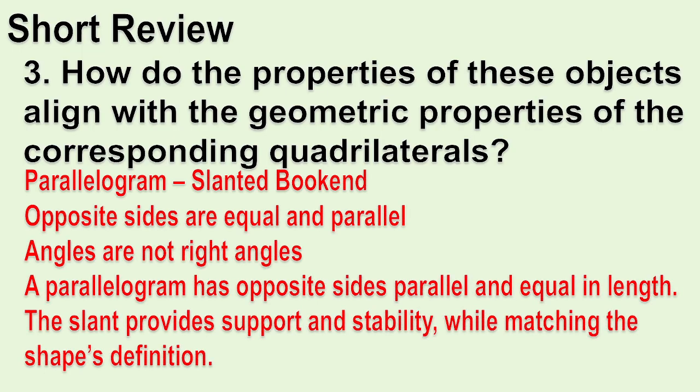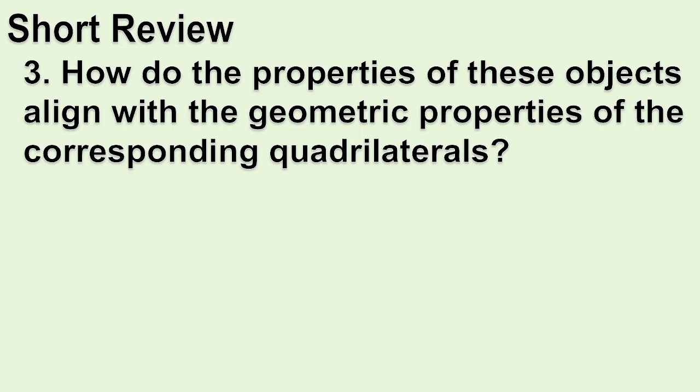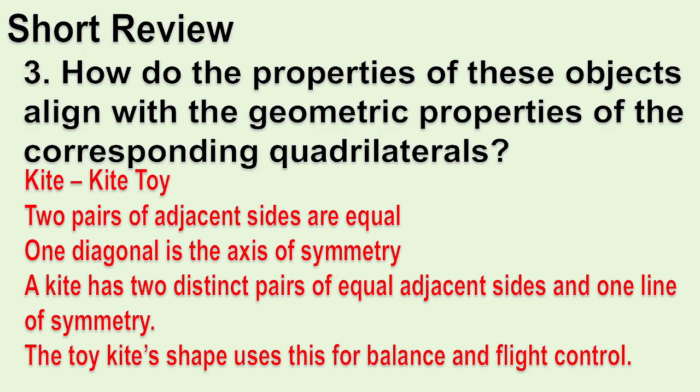Parallelogram — Slanted bookend: Opposite sides are equal and parallel; angles are not right angles. A parallelogram has opposite sides parallel and equal in length. The slant provides support and stability while matching the shape's definition. Kite — Kite toy: Two pairs of adjacent sides are equal; one diagonal is the axis of symmetry. A kite has two distinct pairs of equal adjacent sides and one line of symmetry. The toy kite's shape uses this for balance and flight control.